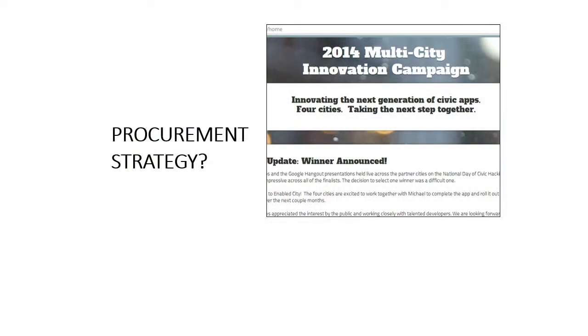Our procurement strategy was web-based. We broadcast an opportunity to submit ideas through three different innovation tracks: analytics, community development, and civic engagement. We ultimately received 25 different applications. We picked six finalists using a rubric to review how each idea would resonate in all four cities. We picked one winner, and what we guaranteed that winner was $5,000 from each city — creating a pool of $20,000.